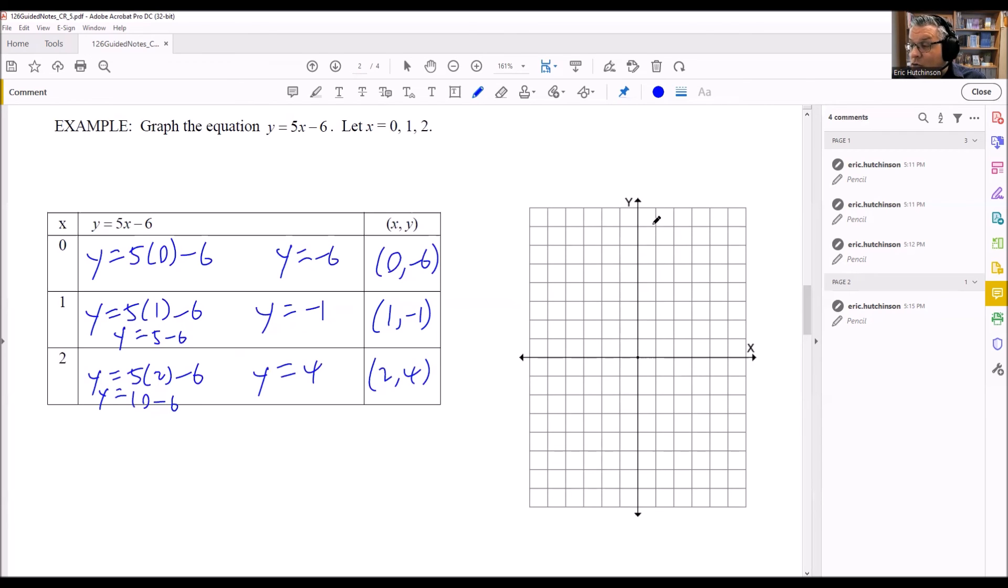For 0, negative 6, you're on the y-axis and you just go down 6. 1, 2, 3, 4, 5, 6. Then 1, negative 1. 1 to the right, and I'm going to go down 1 because the y is negative. And I have 2, 4. Over 2 and up 4. Both of those are positive, so go to the right and then go up. As you see, all three of them do form a nice line like that.